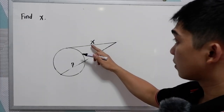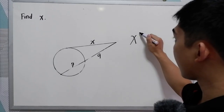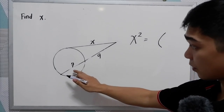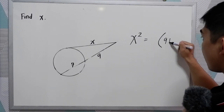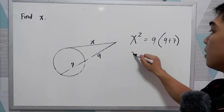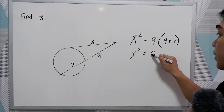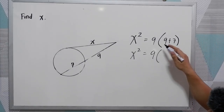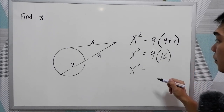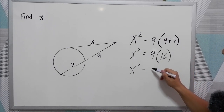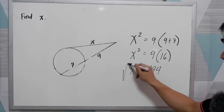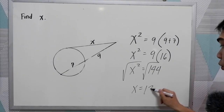Following our theorem, X squared is equal to the total length of the secant, which is 9 plus 7, times the external part, which is 9. So X squared equals 9 times 16, which is 144. Taking the square root, X is equal to 12.